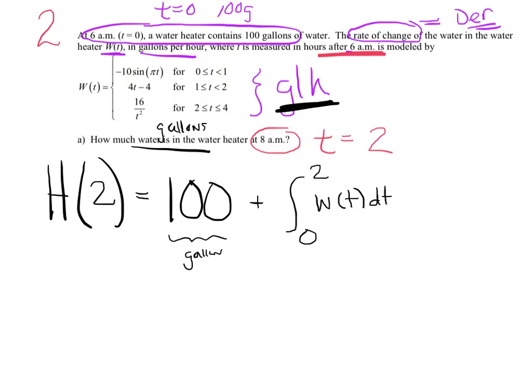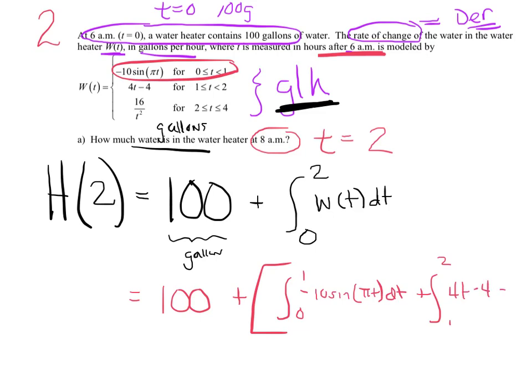Notice it didn't say increasing or decreasing. This number could be negative or positive. It's changing at different times throughout the day. Because I have a breakpoint at 1, I'm going to have to rewrite this integral as 100 plus the integral from 0 to 1 of negative 10 sine of pi t dt plus the integral from 1 to 2 of 4t minus 4 dt.